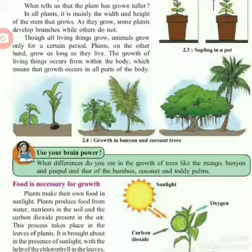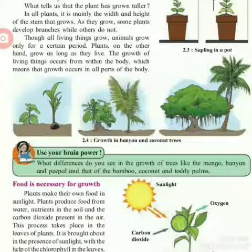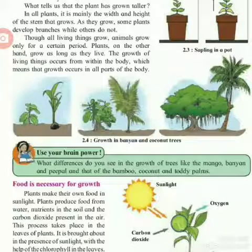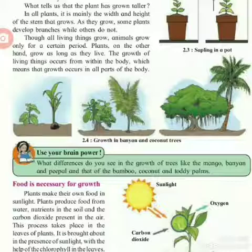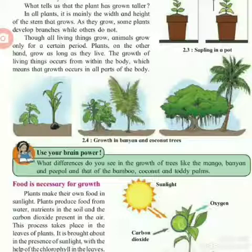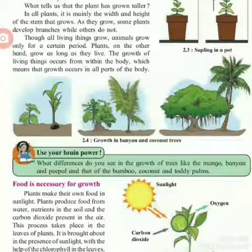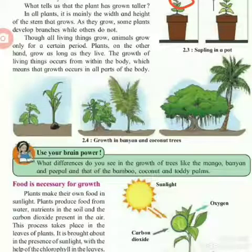What do you observe after 10 or 15 days? As shown here, after 15 days the thread that was first stretched is now loose. This tells us that the plant has grown taller — we tied the thread to the sapling and after 10 or 15 days it became loose, showing the growth of the sapling.